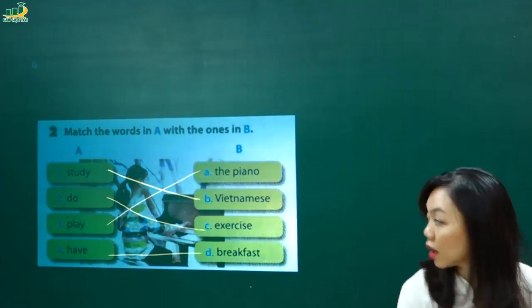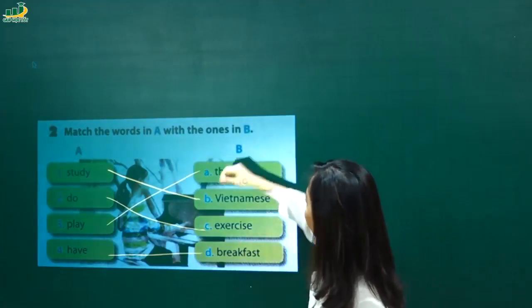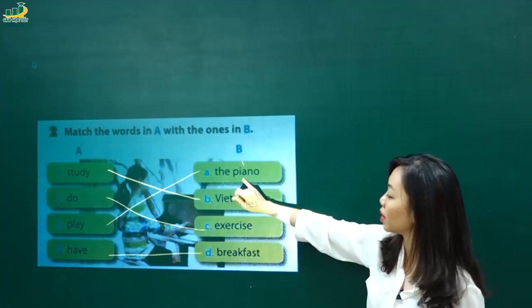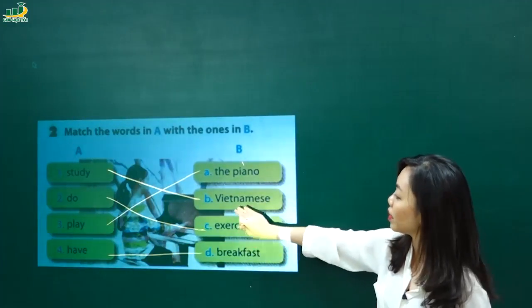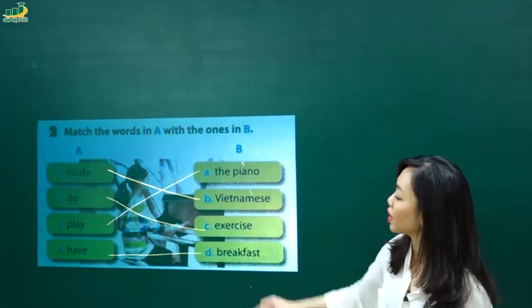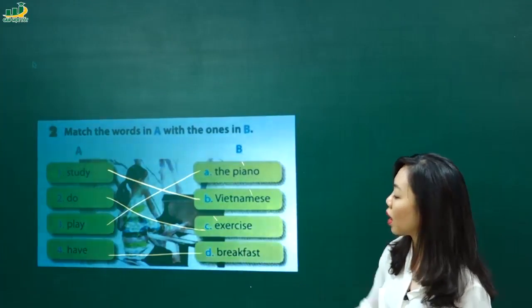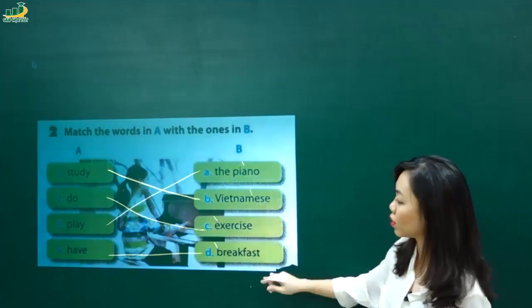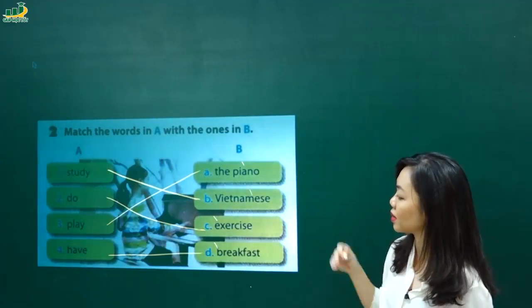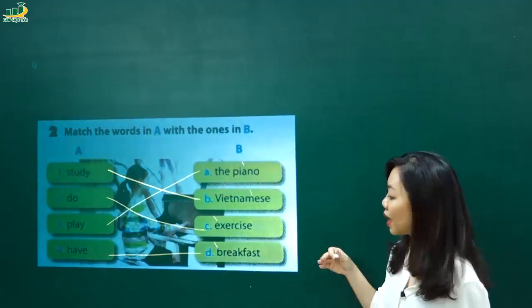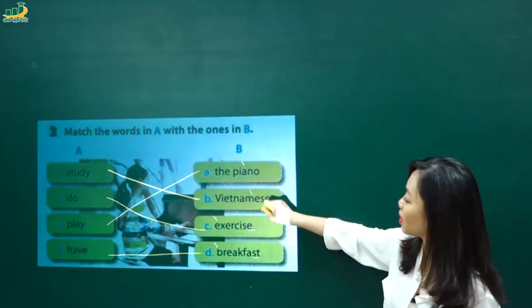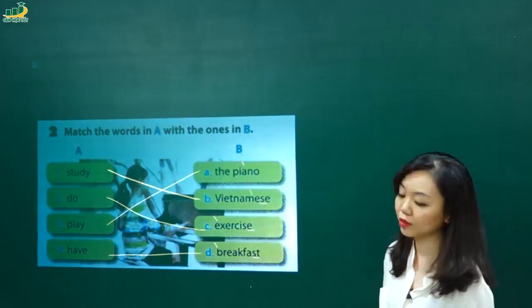Cô nói lại nhé, mình có study Vietnamese, do exercise, play the piano, have breakfast. Nói về phát âm một chút nhé. Mình có trọng âm của từ piano vào. Trọng âm thứ 2 nhé. Âm tiết thứ 2 được nhấn nhé. Piano. Vietnamese. Thì âm tiết thứ 3 được nhấn nhé. Tiếp theo exercise học rồi. Âm tiết đầu tiên. Breakfast. Âm tiết đầu tiên. Học lại nhé. Piano, Vietnamese, exercise and breakfast. Nhớ âm cuối, sờ tờ. Chỗ này là âm d. Đây cũng là âm d. Good. Xong.